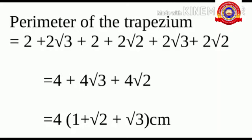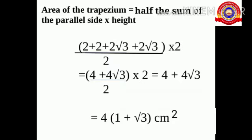Taking 4 as common outside: 4 into (1 plus root 3 plus 2 root 2) centimeters. The area works out to 4 into (1 plus root 3) centimeter square.